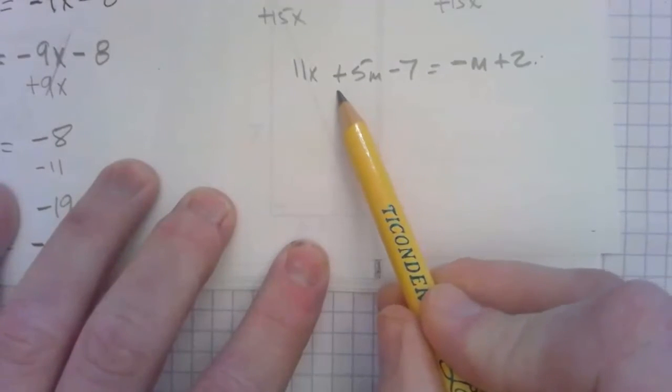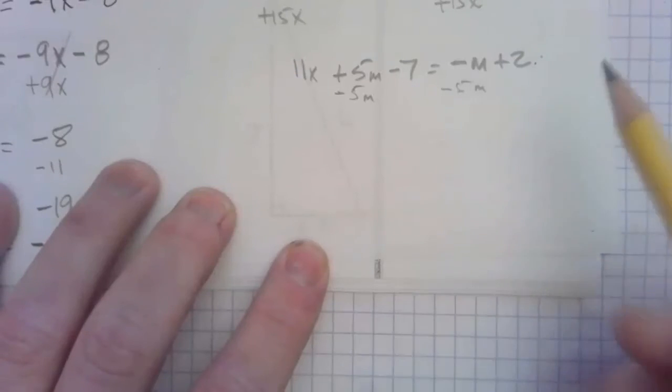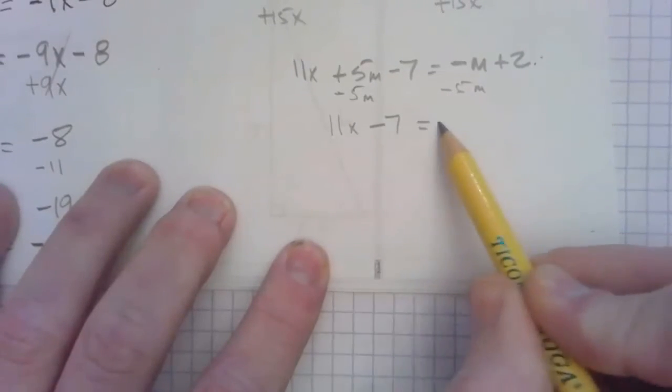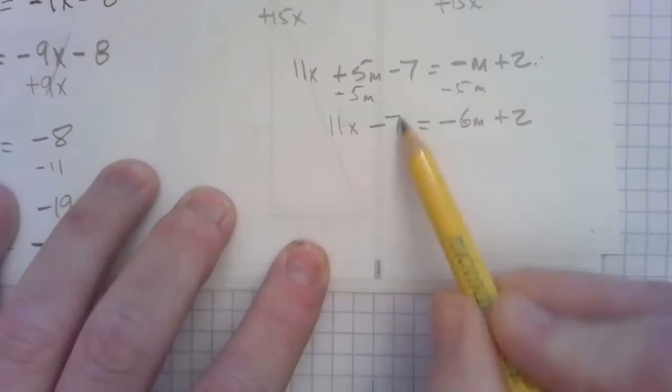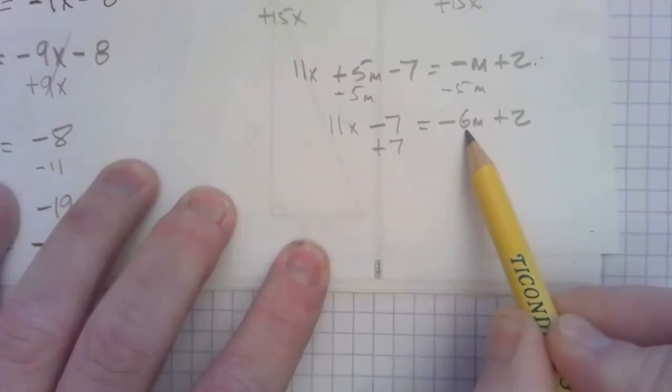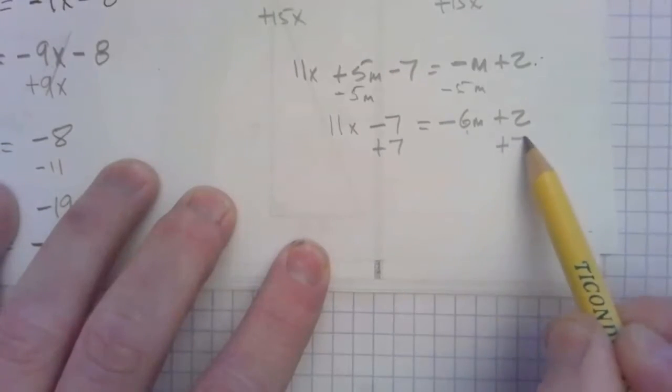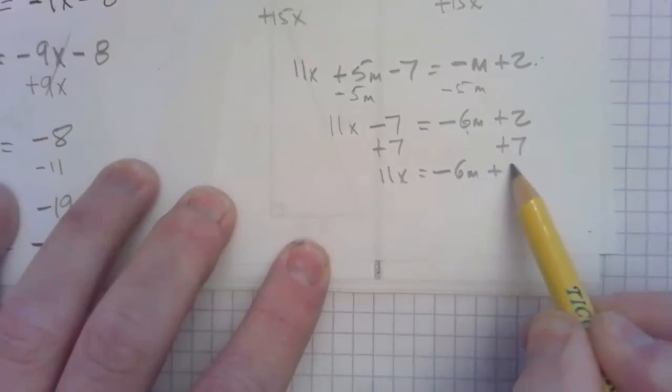And I'll subtract 5m from both sides. 11x minus 7 equals negative 6m plus 2. Still don't have everything over here on the left. I'm going to add 7 to both sides. Now I don't have the 7 here because 7 does not have an m, so I can't add that, but I can add it here. So 11x equals negative 6m plus 9.